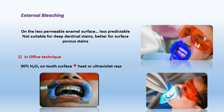Before application of the bleaching agent, all protective measures for soft tissue must be taken — including a cheek retractor or rubber dam, application of a gingival barrier, and suction connected to the device. Then the bleaching agent is applied on the external tooth surface and an activation source — either heat or ultraviolet — is used for the required session time. The session may be repeated several times within the same day or the patient may return for one or two more sessions, depending on the desired shade.